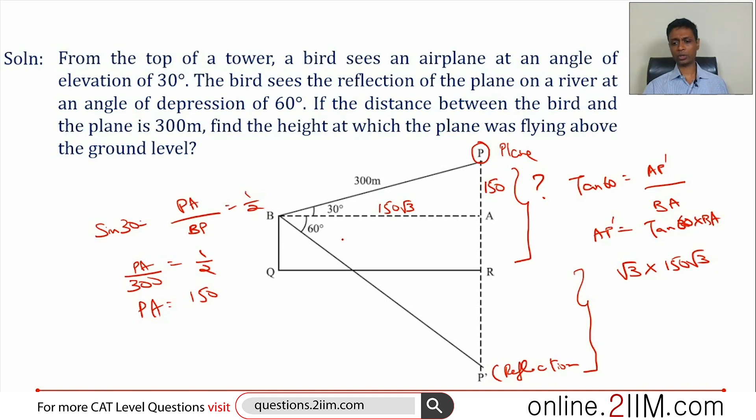PA is 150, AP' is 450. This whole distance is 450. So PP', this distance, is 600, sum of these two. Height at which the plane was flying above ground level is half of that, or 300 meters.